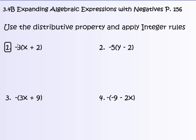Number 1: you're going to distribute negative 3 times x and negative 3 times 2. So negative 3 times x gives negative 3x, and negative 3 times 2 gives negative 6. One negative in the product gives an answer that has a negative. These do not simplify — they don't go together — so the answer is negative 3x minus 6.